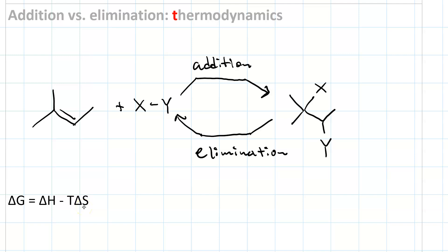We can see we've got two molecules on the left-hand side, and only one molecule on the right. That means that the delta S is negative. Entropy disfavors addition, which is the forward process.